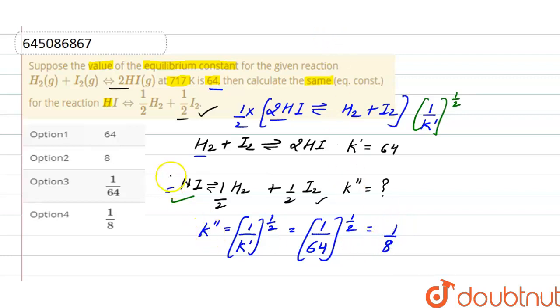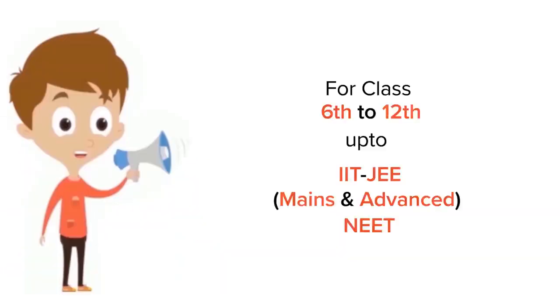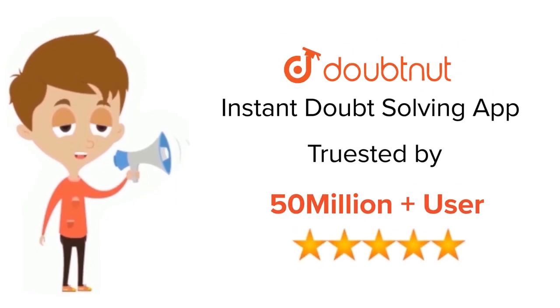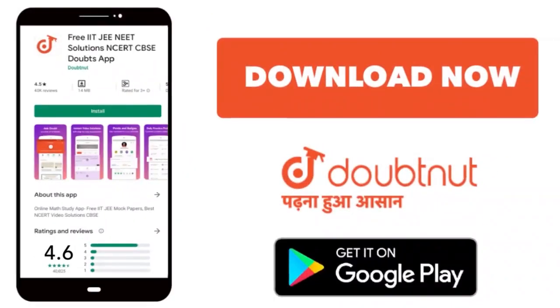So here the equilibrium constant for this given reaction is 1 by 8. So correct option here is option 4. For class 6-12, IIT-JEE and NEET level, trusted by more than 5 crore students, download Doubtnet app today.